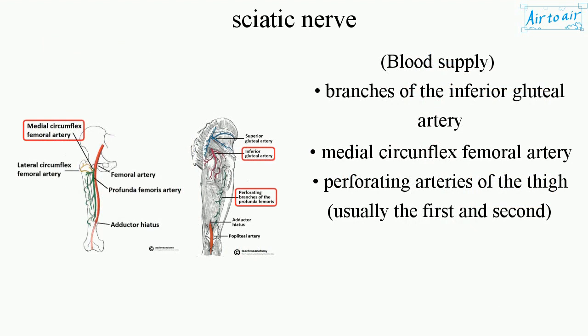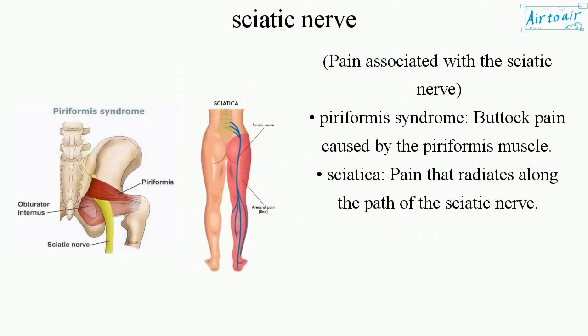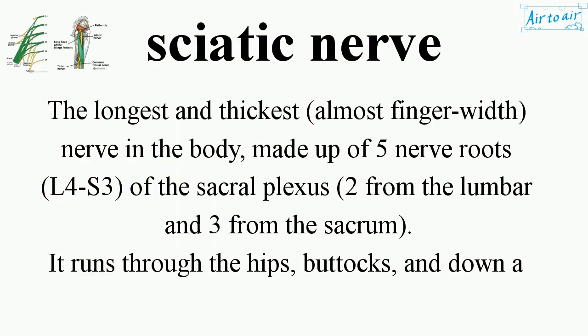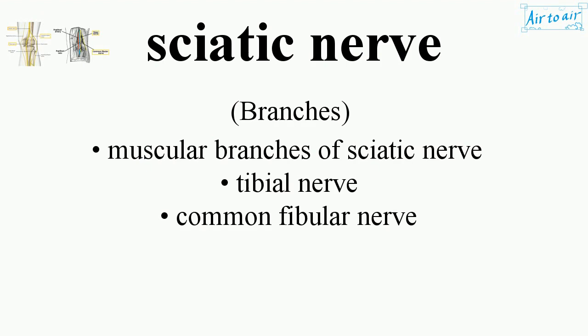Additional blood supply comes from the perforating arteries of the thigh, usually the first and second. Pain associated with the sciatic nerve includes piriformis syndrome — buttock pain caused by the piriformis muscle — and sciatica, pain that radiates along the path of the sciatic nerve.